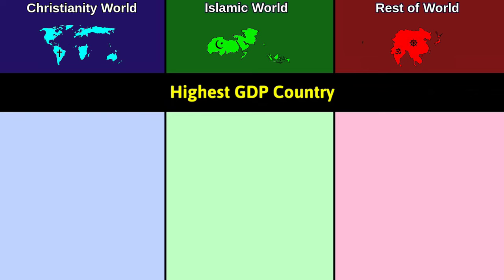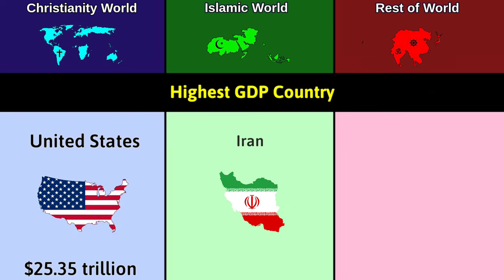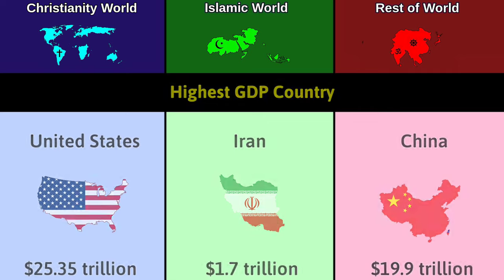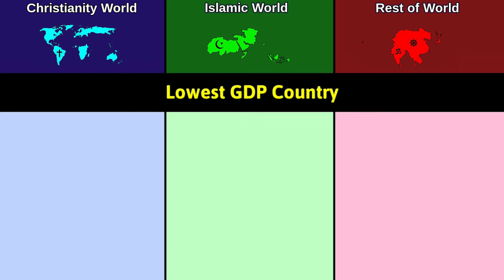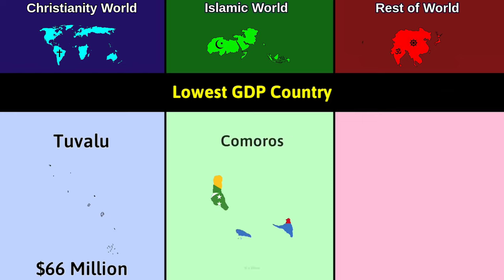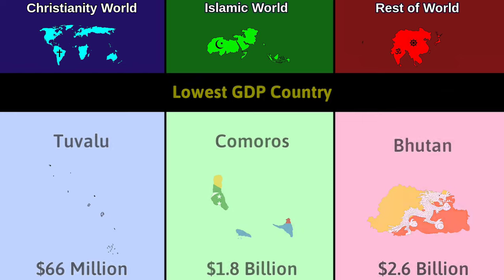Highest GDP country: Christianity — United States at 25.35 trillion dollars; Islam — Iran at 1.7 trillion dollars; Rest — China at 19.9 trillion dollars. Lowest GDP country: Christianity — Tuvalu at 66 million dollars; Islam — Comoros at 1.8 billion dollars; Rest — Bhutan at 2.6 billion dollars.